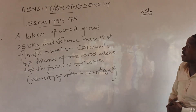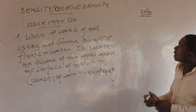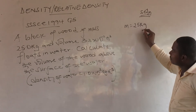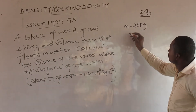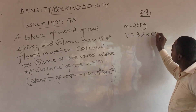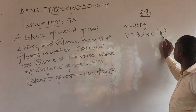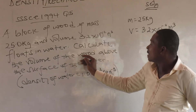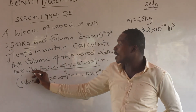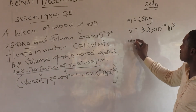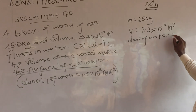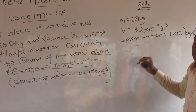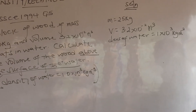Now there is a final question on density and relative density. A block of wood of mass 25 kilograms has a volume of 3.2 times 10 to the power minus 2 cubic meters, and it floats in water. Calculate the volume of the wood above the surface of the water. The density of water is also given as 1 times 10³ kilograms per cubic meter, which equals 1000. Calculate the volume above the water surface.